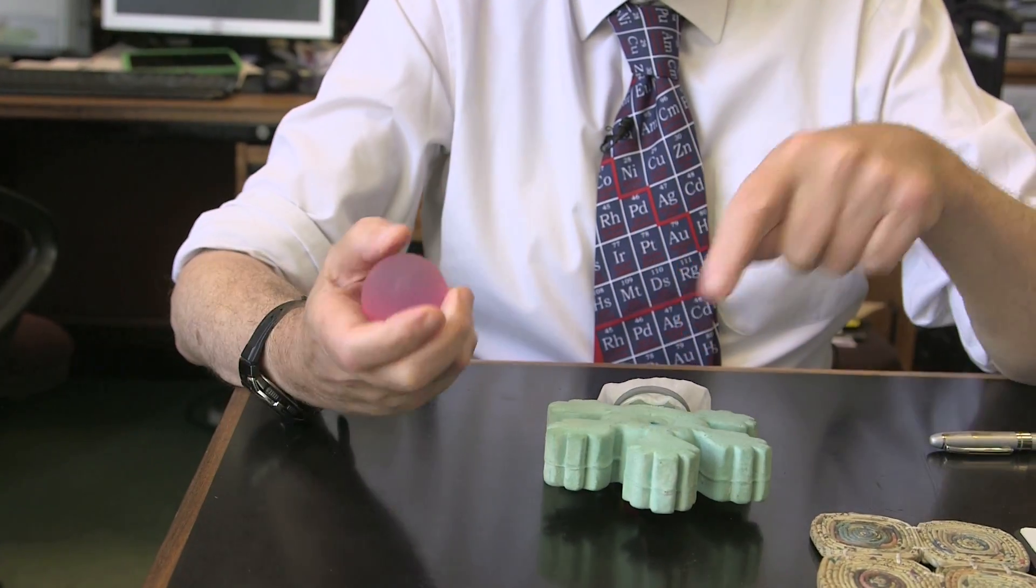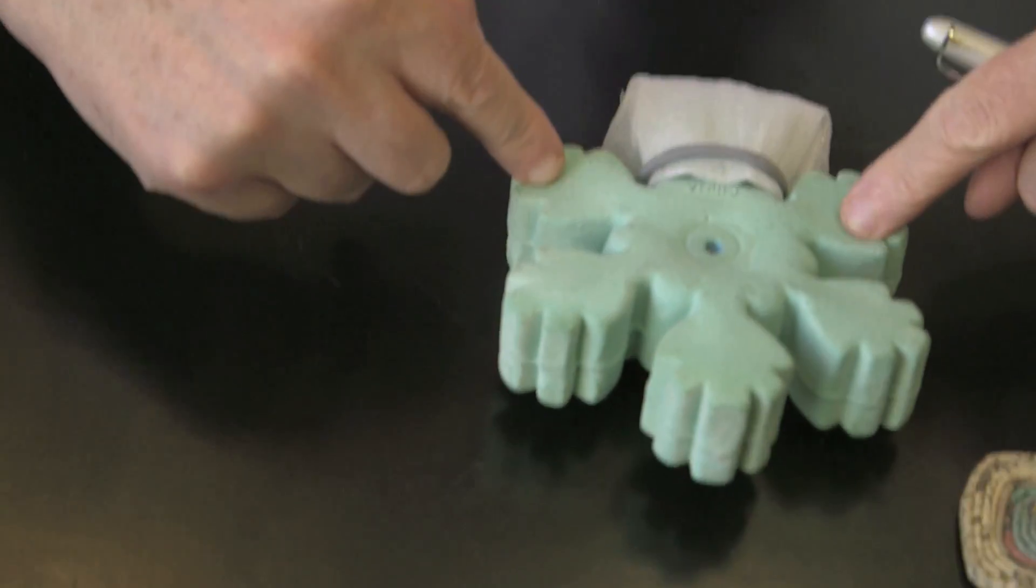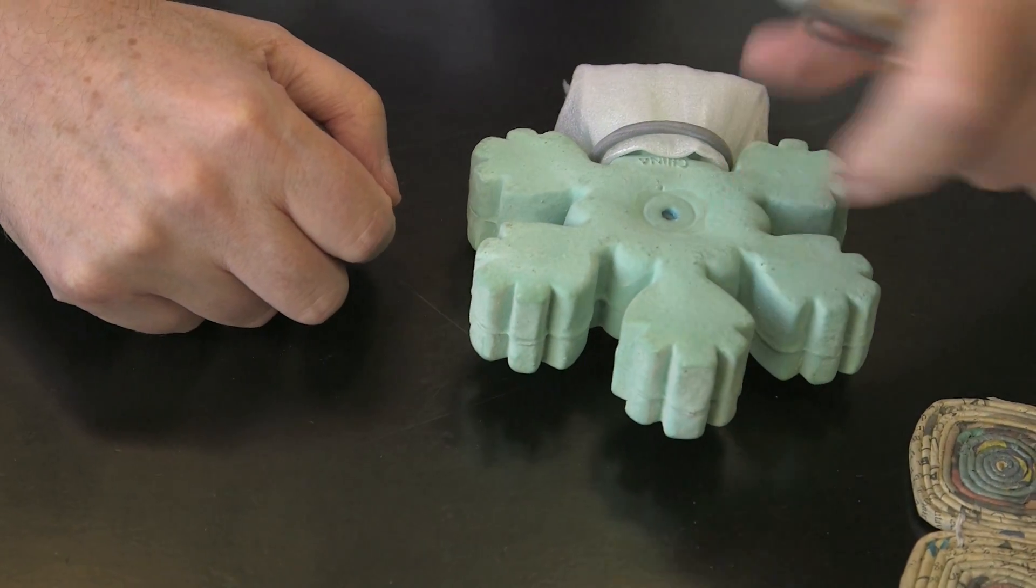But he used this acid, which makes the formaldehyde attack the phenol in this position or that position. These are called the ortho positions or the position here, para.